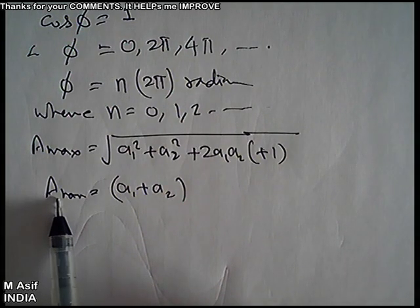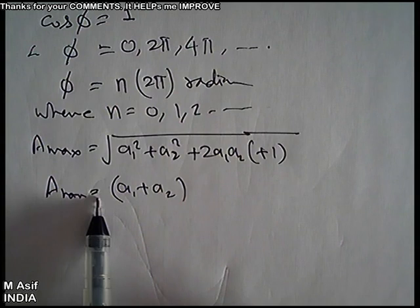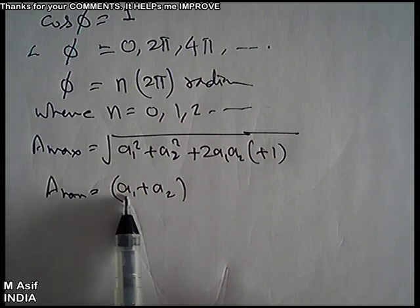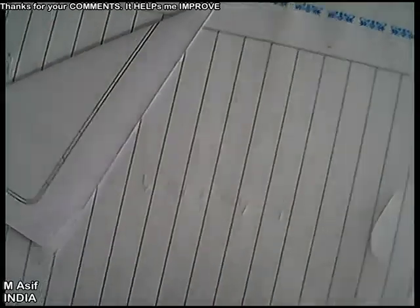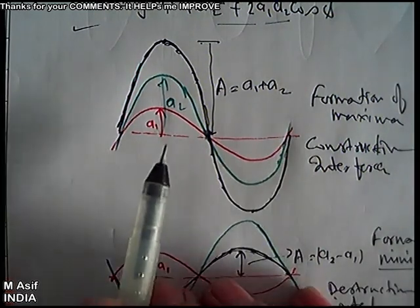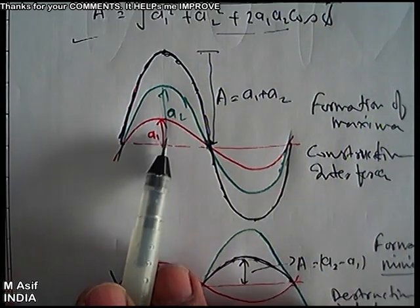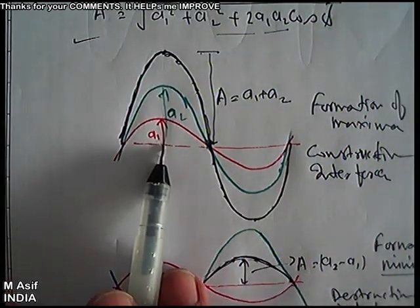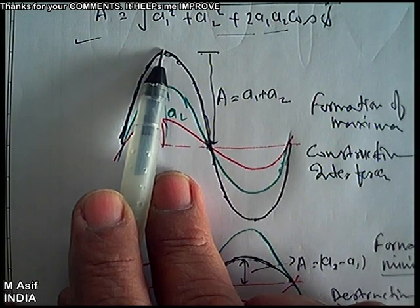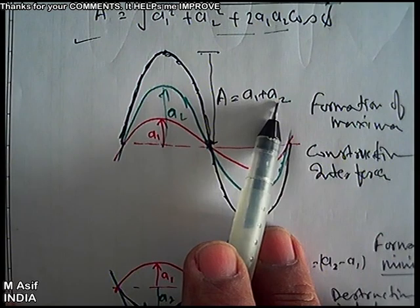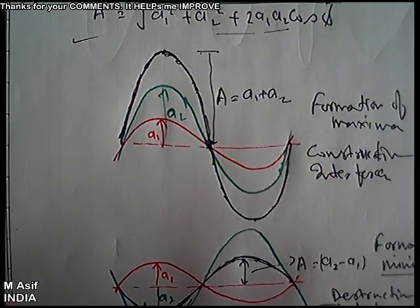The result: where a maximum is formed, the amplitude of the resultant wave equals the sum of the amplitudes of the individual waves. For example, if one wave has amplitude 1 cm and the second has amplitude 2 cm, the particle's displacement at the maximum reaches 3 cm. Net amplitude at maxima = a1 + a2.